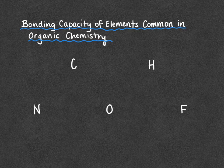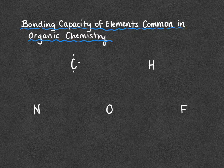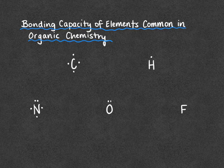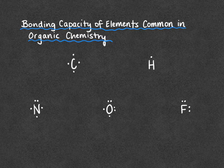In organic chemistry we're going to look at fairly few elements, so we're just going to look at the bonding capacity of these elements. Carbon is going to be in every organic compound that we see. Hydrogen has one unpaired electron. Nitrogen has five valence electrons — two paired, three unpaired. Oxygen has six — four of them are paired up, two are unpaired. And fluorine has seven — three sets of two, or six paired electrons, and one unpaired electron.